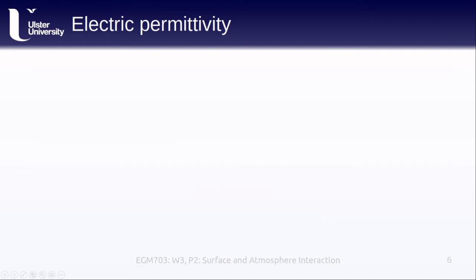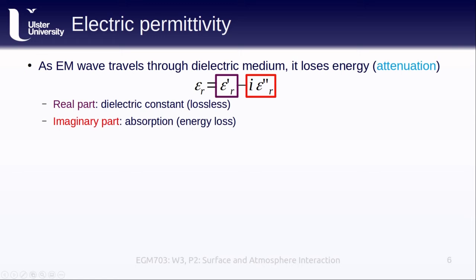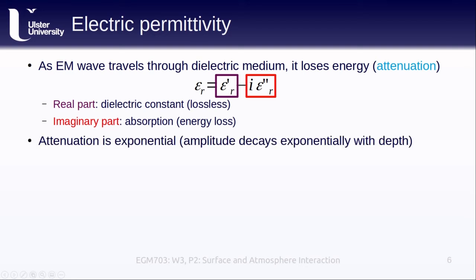As an electromagnetic wave travels through a dielectric medium, it interacts with the molecules or atoms of that medium, causing it to lose or attenuate energy. If we look again at the different components of the electric permittivity, the real part, epsilon prime, or the dielectric constant, is lossless. The imaginary part, epsilon double prime, tells us about how the material absorbs electromagnetic radiation. It relates to the energy loss as a result of propagation through the dielectric medium. One thing to keep in mind is that this attenuation happens exponentially.